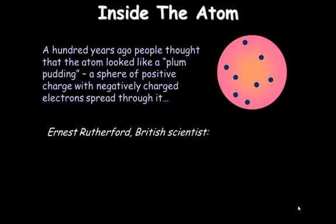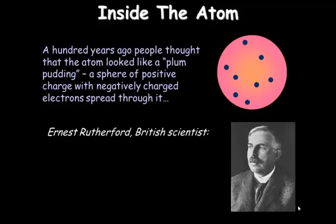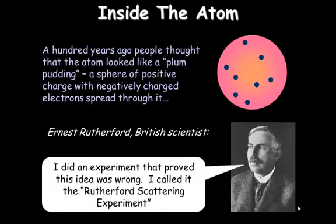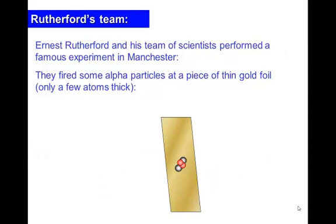Then along came a guy called Ernest Rutherford, who was a British scientist, and what he did, he thought, I can do an experiment to prove or disprove this. And it was known as the Rutherford Scattering Experiment. Now, what Rutherford did was he gathered his team of scientists, and it was actually the team of scientists who did the experiment. A guy called Geiger, who you might recognize from a Geiger counter, and a guy called Marsden. And they did this experiment in Manchester.